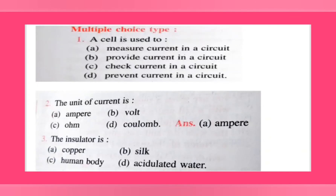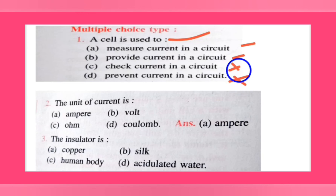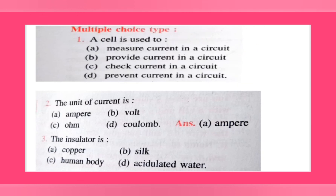Now let us try to answer a few multiple choice questions. First: a cell is used to — measure current, provide current, check current, or prevent current in a circuit? Obviously, a cell provides the current in a circuit — option B. Second: the SI unit of current is — obviously ampere. Third: which among the options is an insulator? Please comment your answer in the comment box.